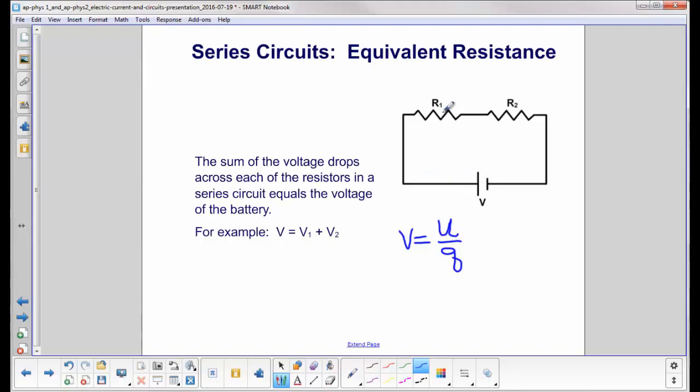So each charge that leaves here flowing in a current has a certain amount of energy. What a resistor does, it takes that energy of that charge, and some of the energy from the charge is transferred into heat in the resistor. It heats it up, it loses energy.